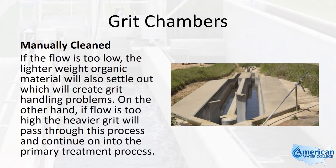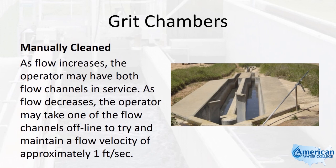On the other hand, if flow is too high, the heavier grit will pass through this process and continue on into the primary treatment process. As flow increases, the operator may have both flow channels in service. As flow decreases, the operator may take one of the flow channels offline to try and maintain a flow velocity of approximately one foot per second.